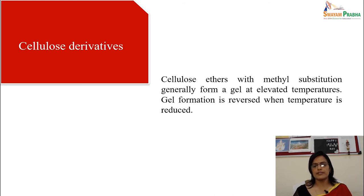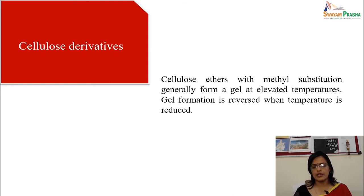Cellulose ethers with methyl substitution generally form a gel at elevated temperatures, and this gel formation is reversed when the temperature is reduced.